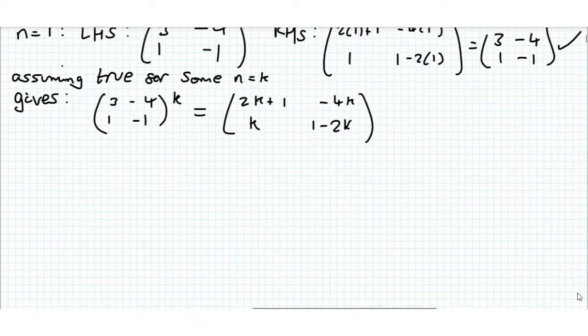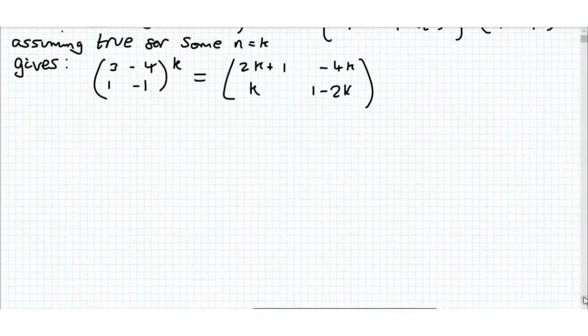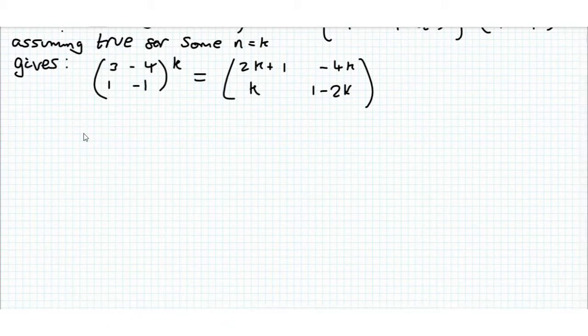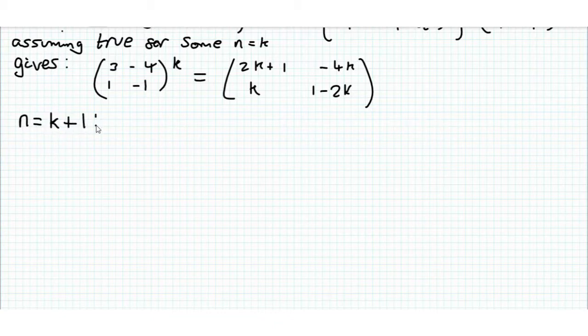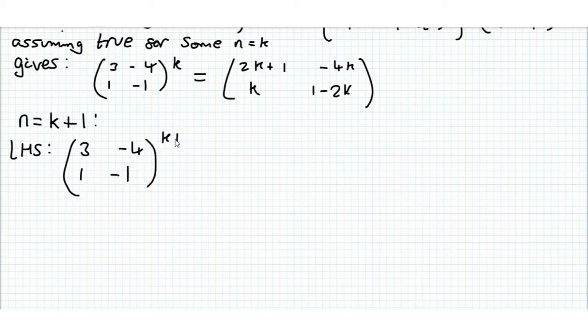If we can use this result to show that the result we are trying to prove is true for n equals k+1, we can then do our induction. So now we are considering n is equal to k+1. From our left hand side, we have (3, -4; 1, -1) to the power of k+1, and by our indices laws, this is the same as (3, -4; 1, -1) multiplied by (3, -4; 1, -1) to the power of k.